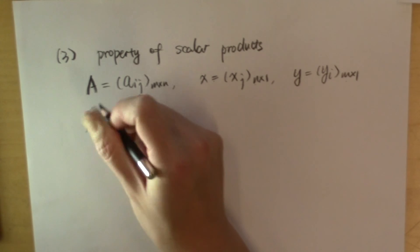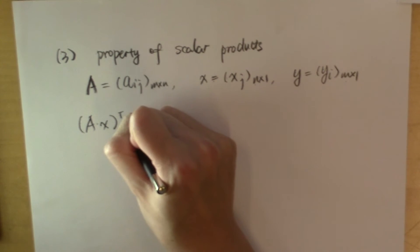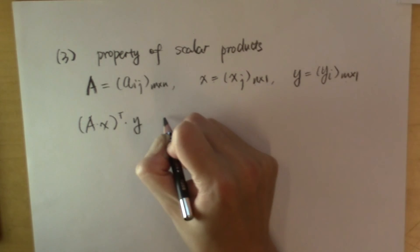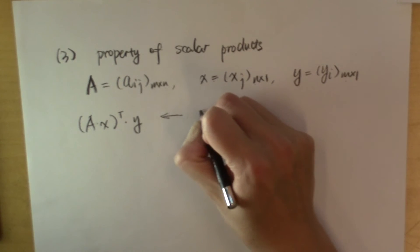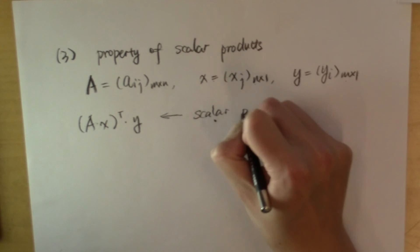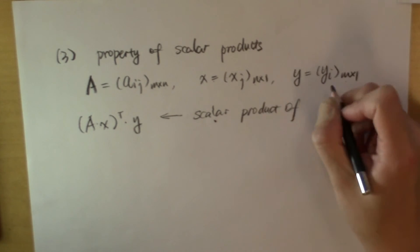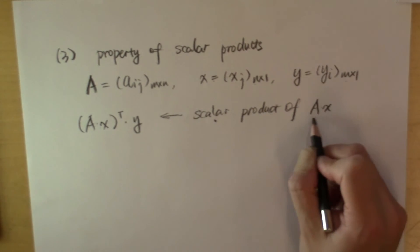what is A times X transpose times Y? First of all, we recognize that this is the scalar product of the vector A times X. What's the dimension of this vector?